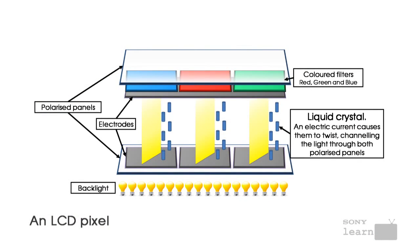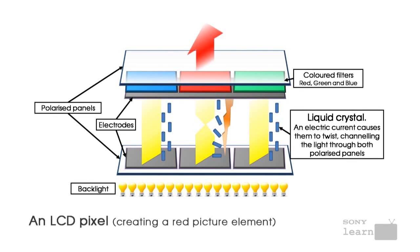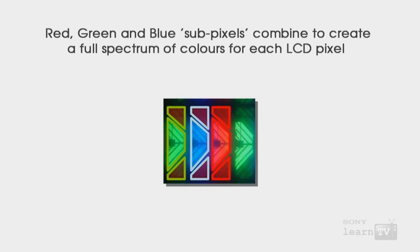All LCDs fundamentally work the same way. They have a backlight behind the screen, and that backlight is shining through a liquid crystal panel. Each individual pixel is represented by a liquid crystal door. That door can open to a variety of different levels to allow various amounts of light to pass through it. In front of each of those doors, you have a red, a green, or a blue coloured filter.